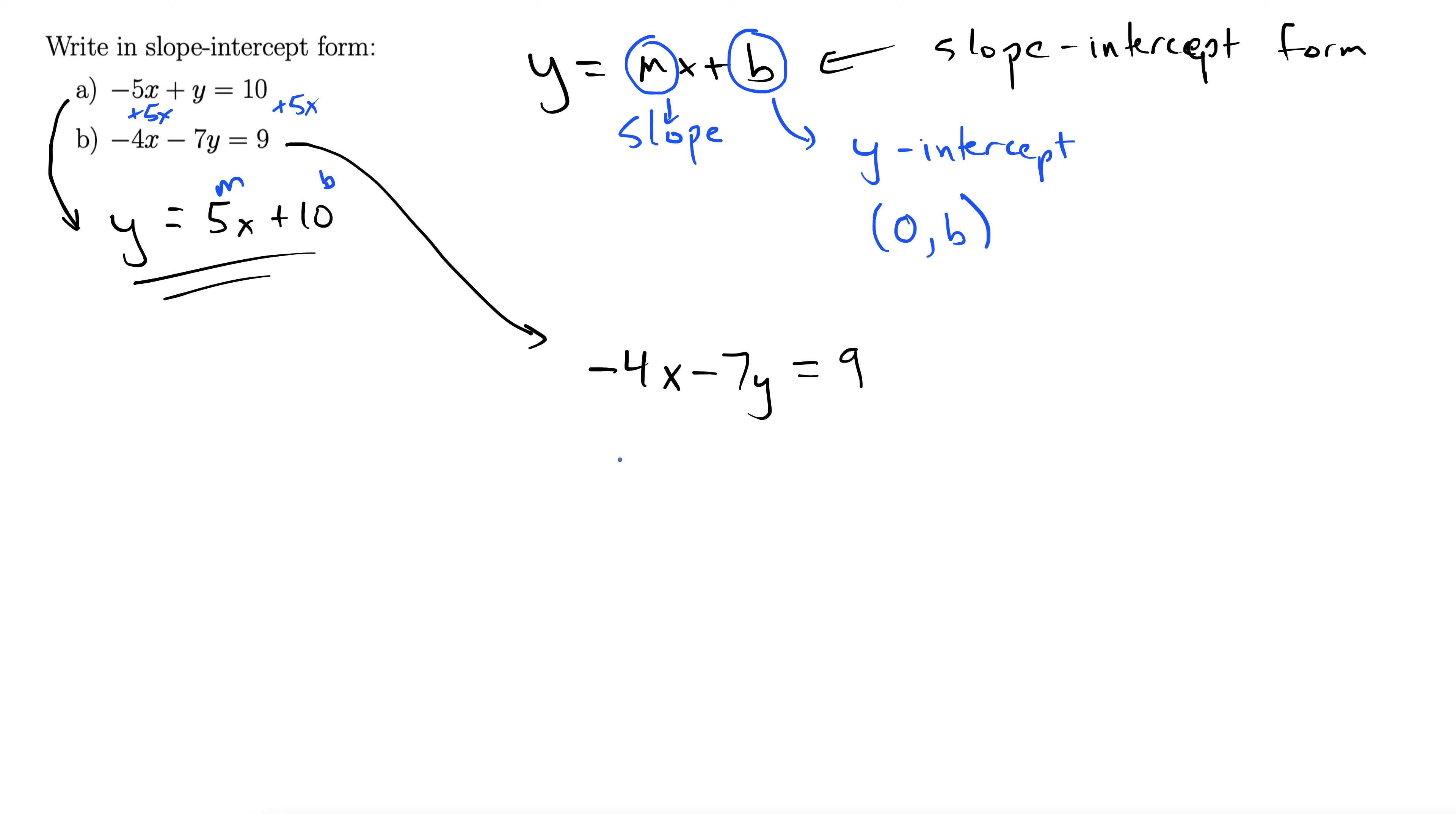Add 4x to both sides. That gives us negative 7y equals 4x plus 9. Then we divide by negative 7.